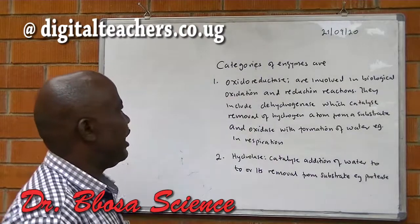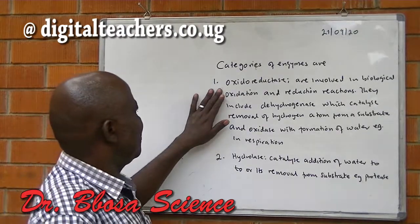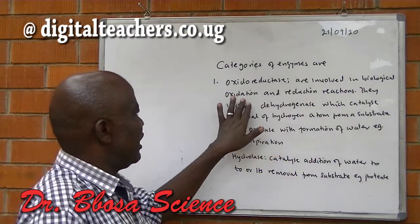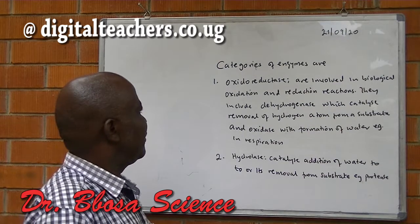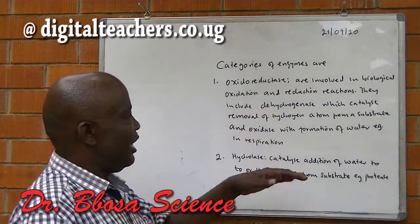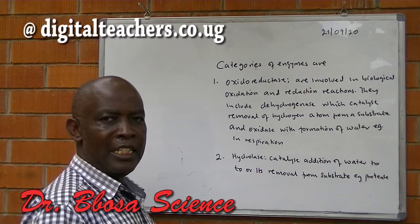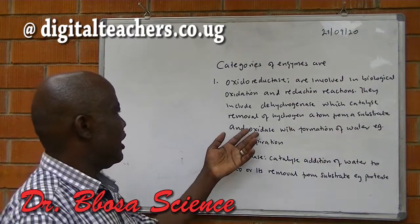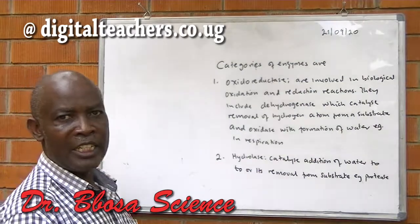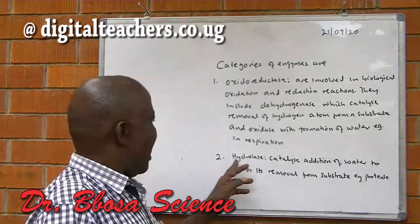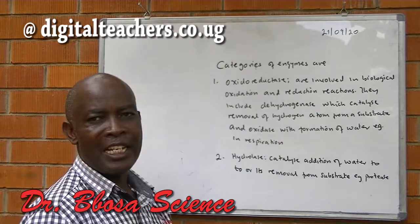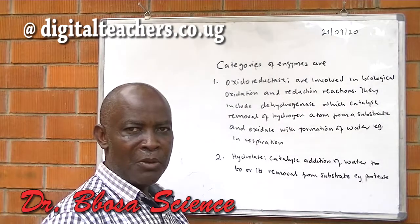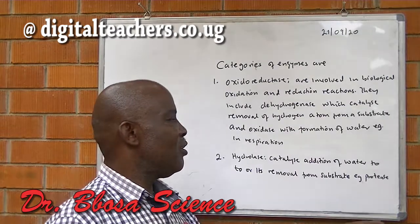Categories of enzymes. One, oxidoreductases are involved in biological oxidation and reduction reactions. They include dehydrogenase, which catalyzes removal of hydrogen atoms from a substrate, and oxidase with formation of water — for example, in respiration. Two, hydrolases catalyze addition of water to, or removal of water from, the substrate. For example, protease.